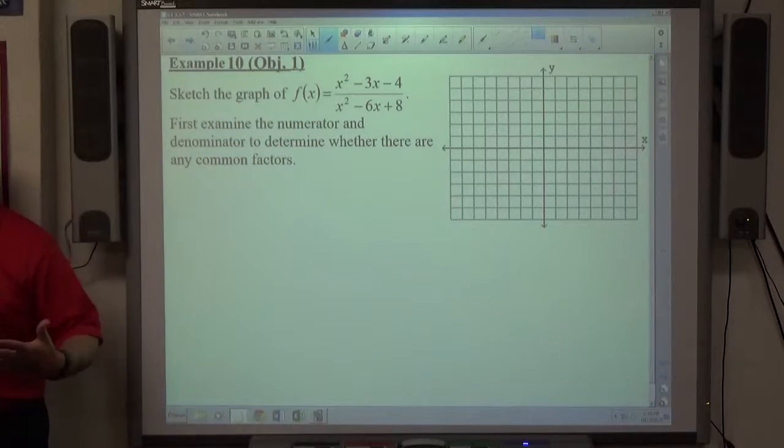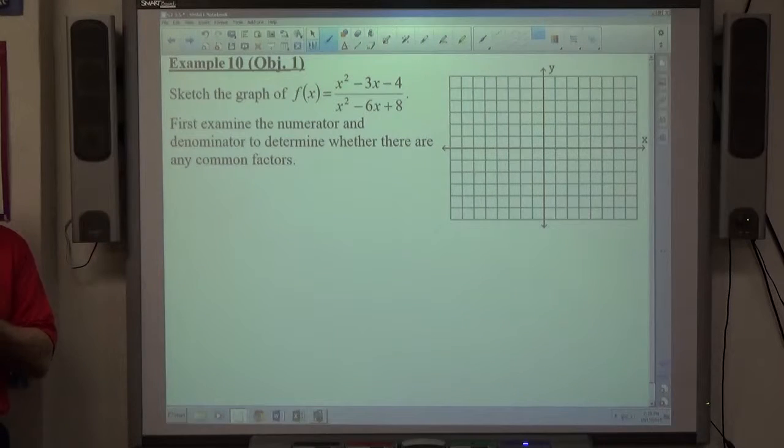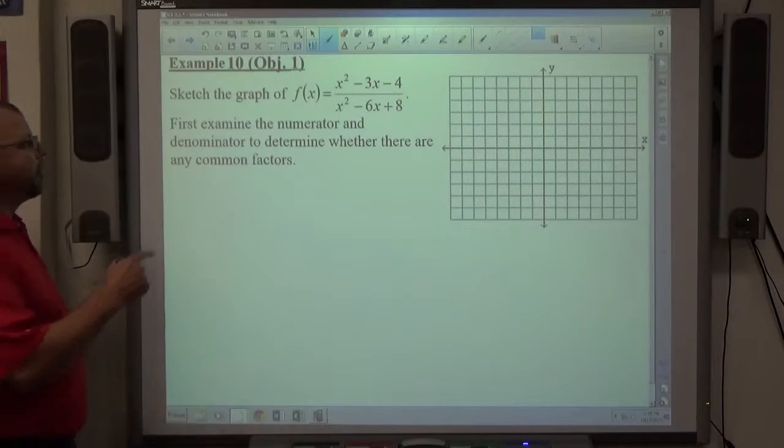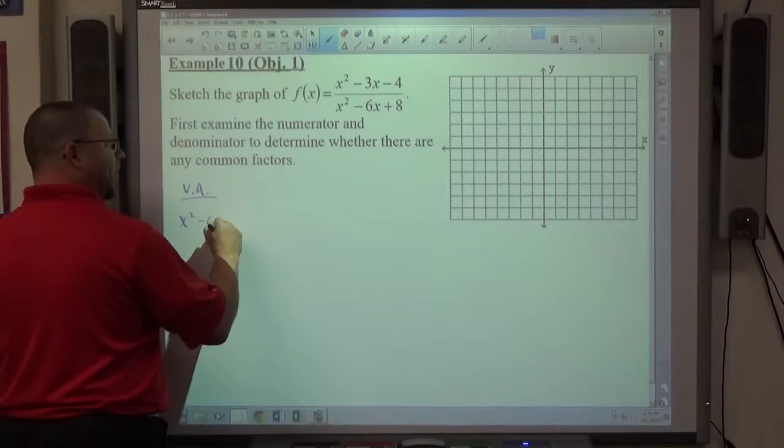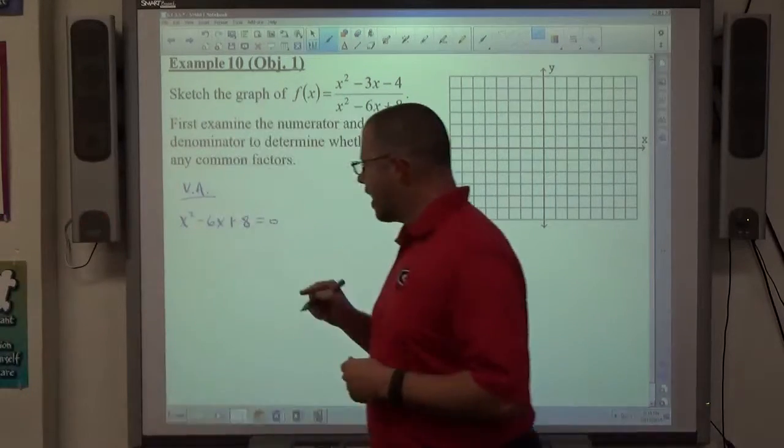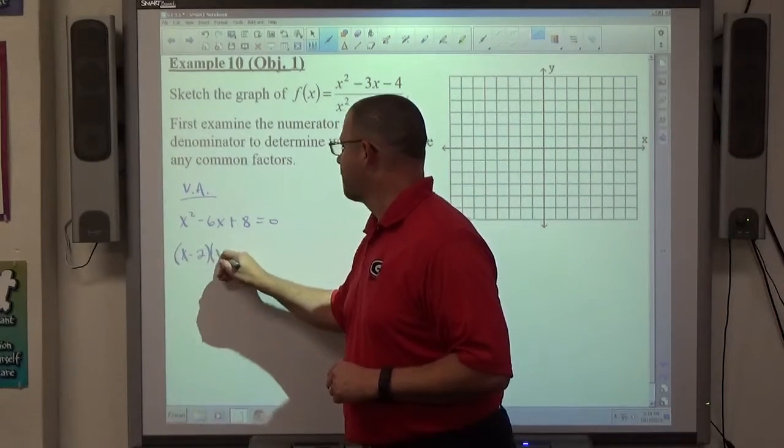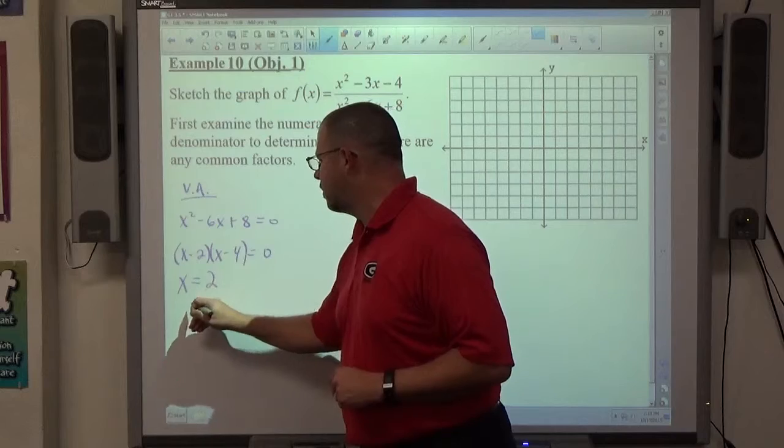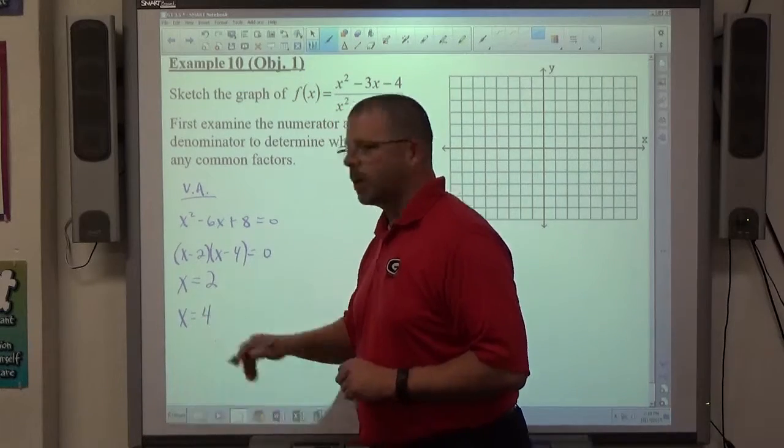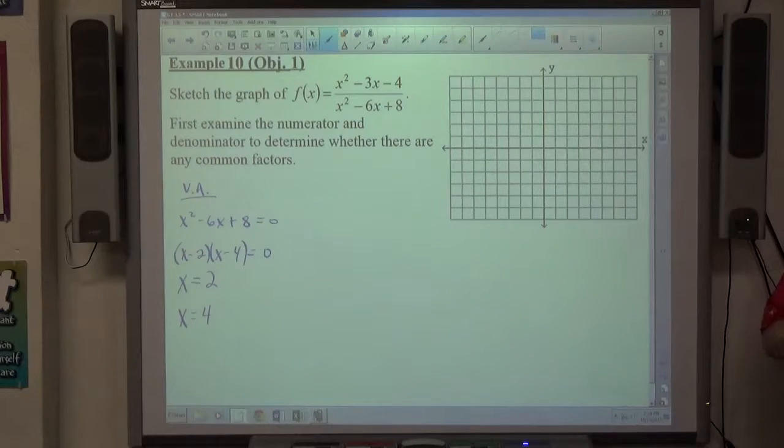If we follow the exact procedure I gave to you on Friday for graphing any rational function, our first task is to establish vertical, horizontal, and/or slant asymptotes. If I start off with vertical asymptotes, I simply take the denominator, x² - 6x + 8 = 0. That's a quadratic function. I happen to see that it factors to (x - 2)(x - 4). That gives me candidates for the vertical asymptote of x = 2 and x = 4. That doesn't mean that's what the vertical asymptotes are. That simply means that's what the vertical asymptotes might be.